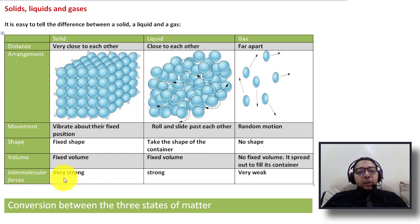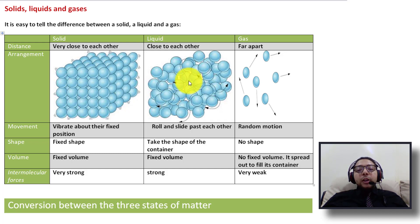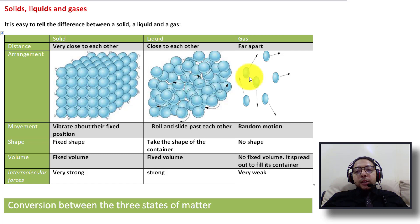The last point is intermolecular force. For solids, the intermolecular force is very, very strong — the particles act as one unit and are held together tightly in one space. For liquids, the force is strong but not strong enough to keep the particles from moving, so it's weaker than in solids. For gases, the force between particles is very, very weak, so particles can't maintain the same position and always move randomly.